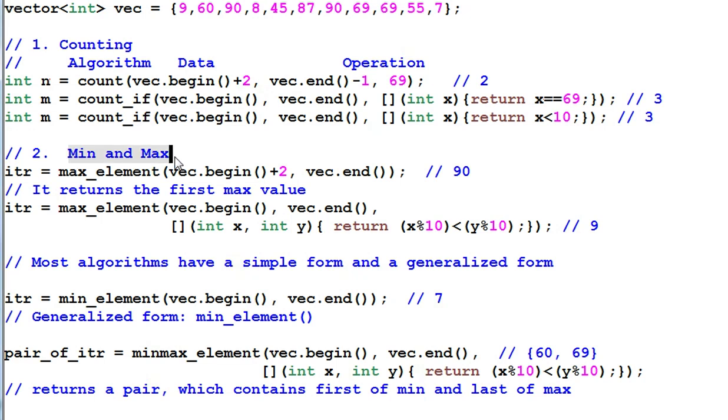Number two, min and max. Max element returns the first biggest element in this data range. And since in this data range, the biggest element is 90, and there are two 90s, the max element will return the first match, the first 90. Most of the search algorithm returns the first element that matches, but some of them will return the last match.